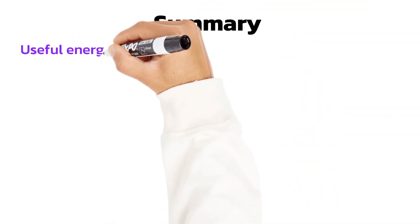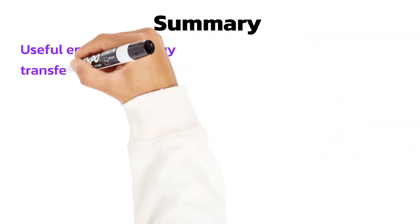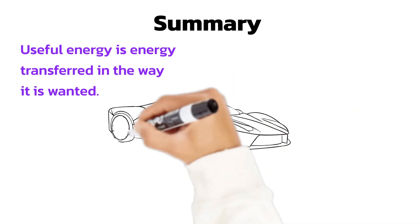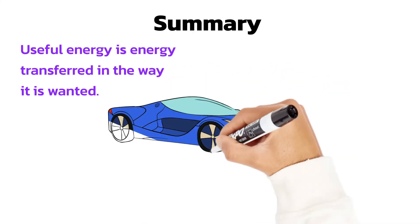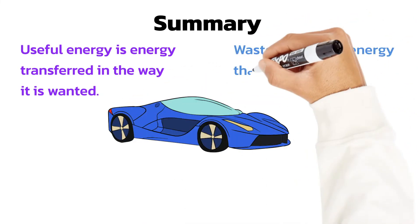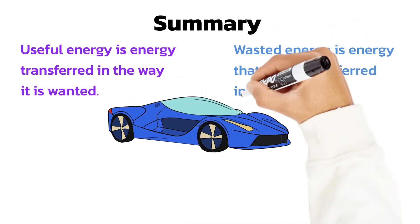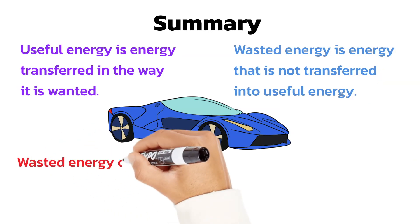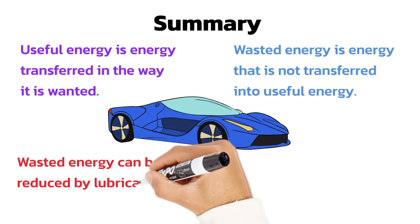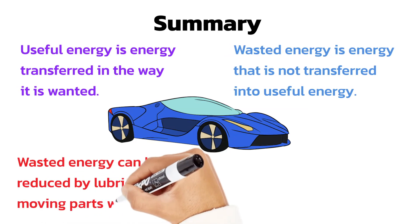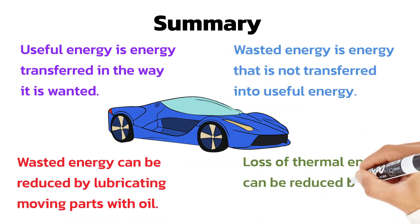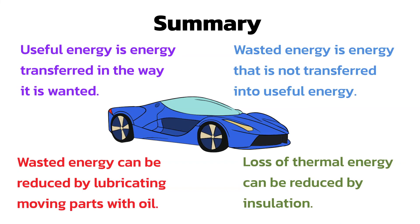To summarize the main points you need to know: useful energy is energy transferred in the way it is wanted, like the kinetic energy of a sports car. Wasted energy is energy that is not transferred into useful energy, usually as heat energy dissipated to the surroundings. We can reduce the amount of energy wasted by lubricating moving parts to reduce friction, and by using insulation to reduce heat loss.